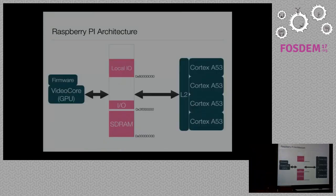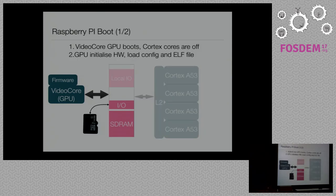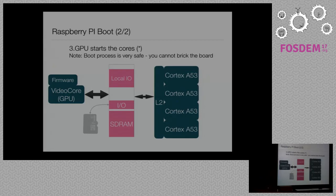The architecture of the Raspberry Pi is a little bit unusual. There are four ARMv8 64-bit CPUs that share a level 2 cache, and there is also the VideoCore GPU, which contains and uses the firmware. They share the memory. The boot process is interesting and unusual — it's the GPU that starts first, running its firmware, and then loading from the SD card, it starts the application into memory. Once the application is loaded, it starts all the CPUs.